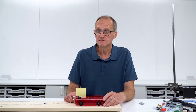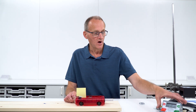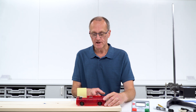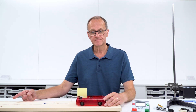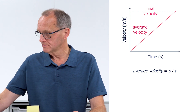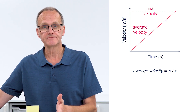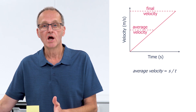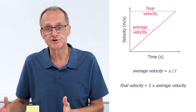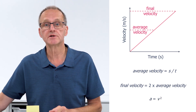If you don't have any light gates or data logging equipment, it's still possible to do this experiment using just a stop clock. Time the trolley going from rest over half a metre, then calculate the average velocity by dividing 0.5 m by the time measured. Assuming uniform acceleration, the final velocity is twice the average. Once you have the final velocity, squaring it gives you the acceleration.